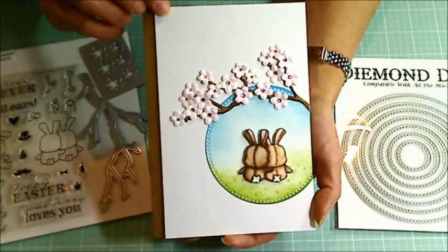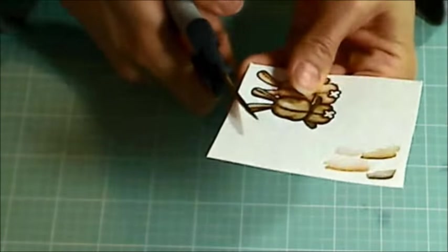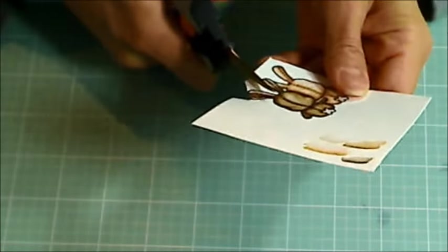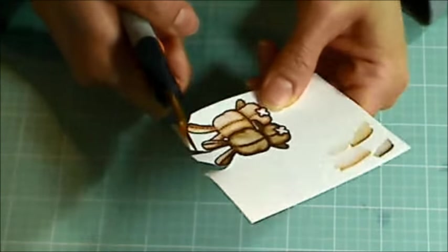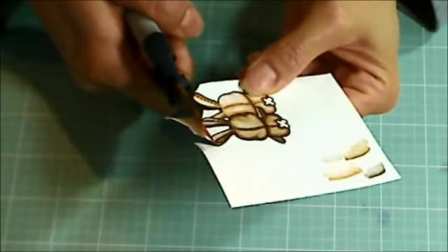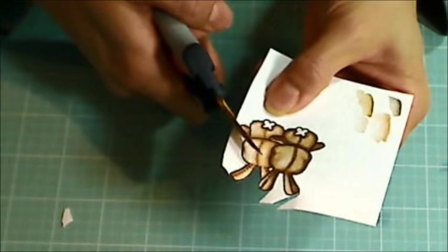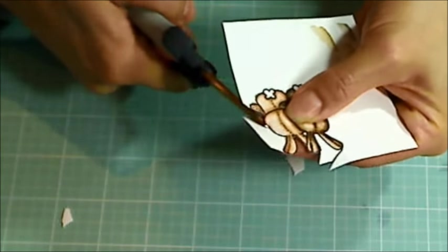I hope you all enjoy this process video. So you'll see I've already colored in these cute little bunnies. I used Tim Holtz Distress Markers and a Pento Water Brush. If you want to know about the specific colors I use, please check out my blog post that I will link to below in the description box.